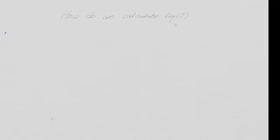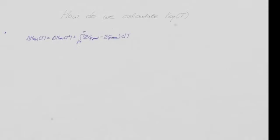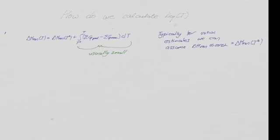Now we've calculated the equilibrium constant K at 25°C. How do we calculate it at some other temperature T? We first need to know how the enthalpy of reaction changes with temperature. The difference between the enthalpy of reaction at T and at 25°C is caused by the difference between the CP of the products — multiplied according to stoichiometry — minus the CP of the reactants. Usually, and particularly for initial estimates, that term is pretty small, so for first estimates the enthalpy of reaction is roughly constant at any other temperature.